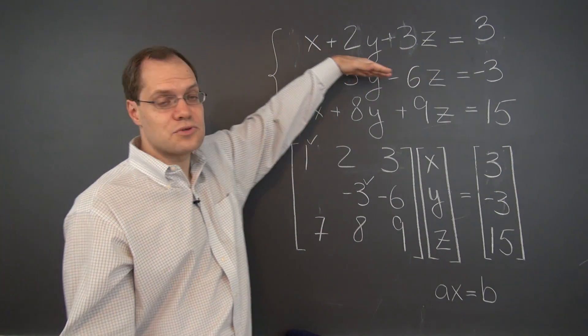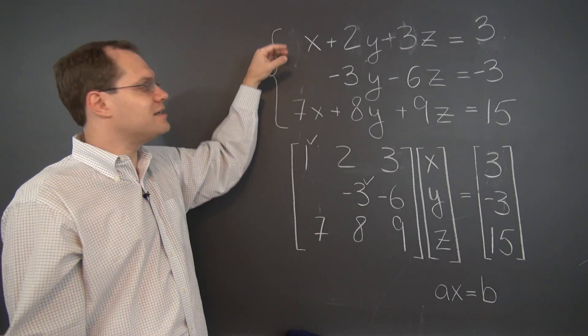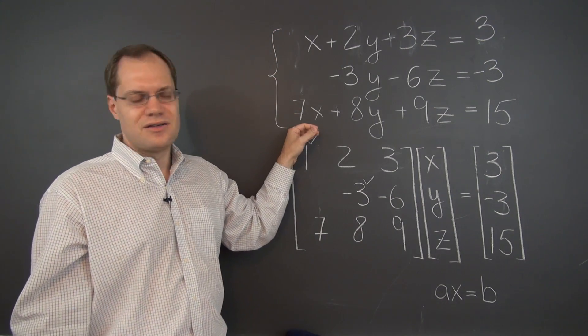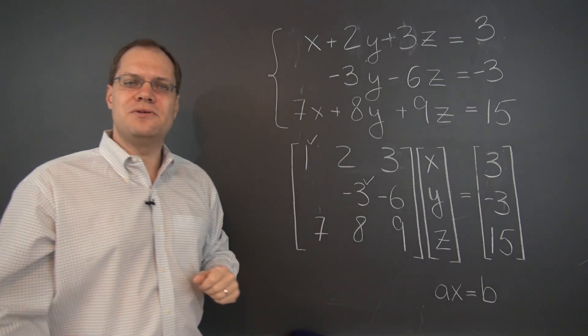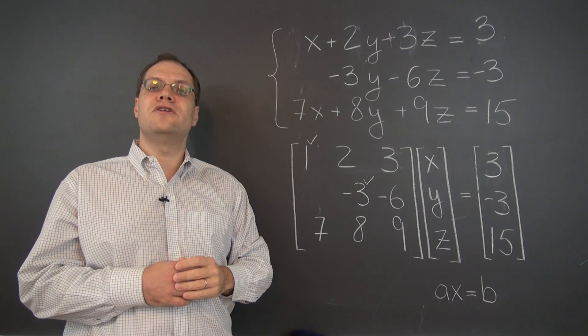Or in terms of matrices, to switch the rows around. And once again, remember to switch the numbers on the right-hand side as well. Just because you should think, as we're doing right now, of what we're doing as manipulating equations. So if you switch two equations, of course the right-hand sides need to be switched as well.